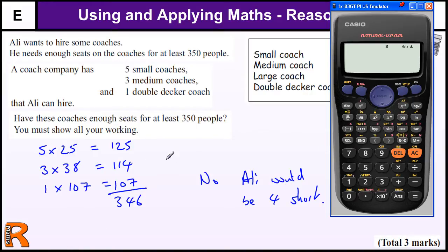This is worth 3 marks. You'll obviously get 1 mark for doing some of the calculation. If you've got at least 2 of these multiplications, that's worth 1 mark. If you've got the 346, that's worth 1 mark, or if you've just got the 4 that you're short, that's worth a mark in the method. Obviously, if you don't clearly write the answer, you're not going to get the third mark.